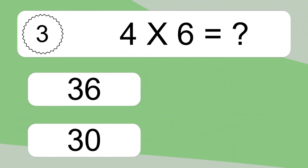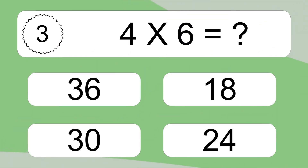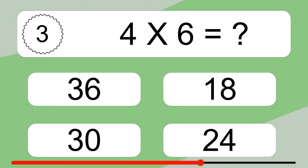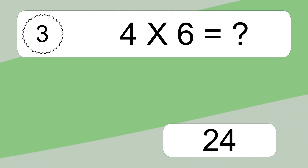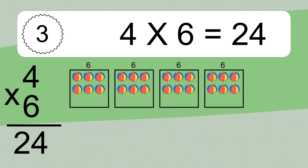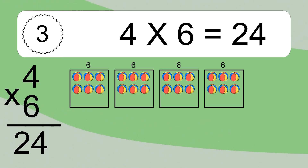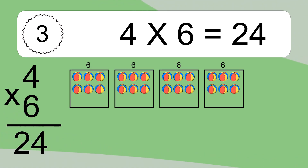4 times 6 equals what? 4 times 6 equals 24. We have 4 boxes, and each box has 6 colorful balls inside. If you count all the balls in all the boxes together, you will have 4 times 6 balls. This equals 24 balls.